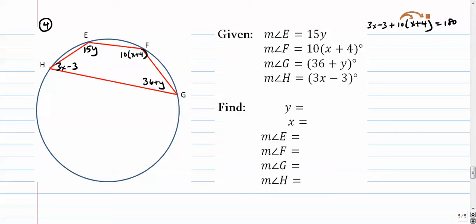We need to distribute this guy first. Take 10, distribute it into both terms. That gives me 10x plus 40 there. We're going to combine like terms, 13x. Combine constants, 37 equals 180.